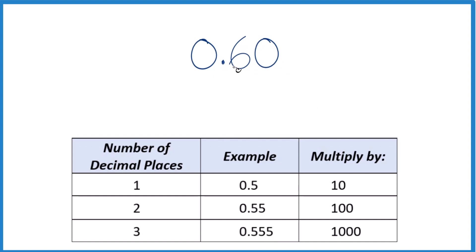So first off, we have 0.60. And really, we don't need to have this zero here on the end. If we remove it, we still have the same value. So 0.6, that's the same value as 0.60.